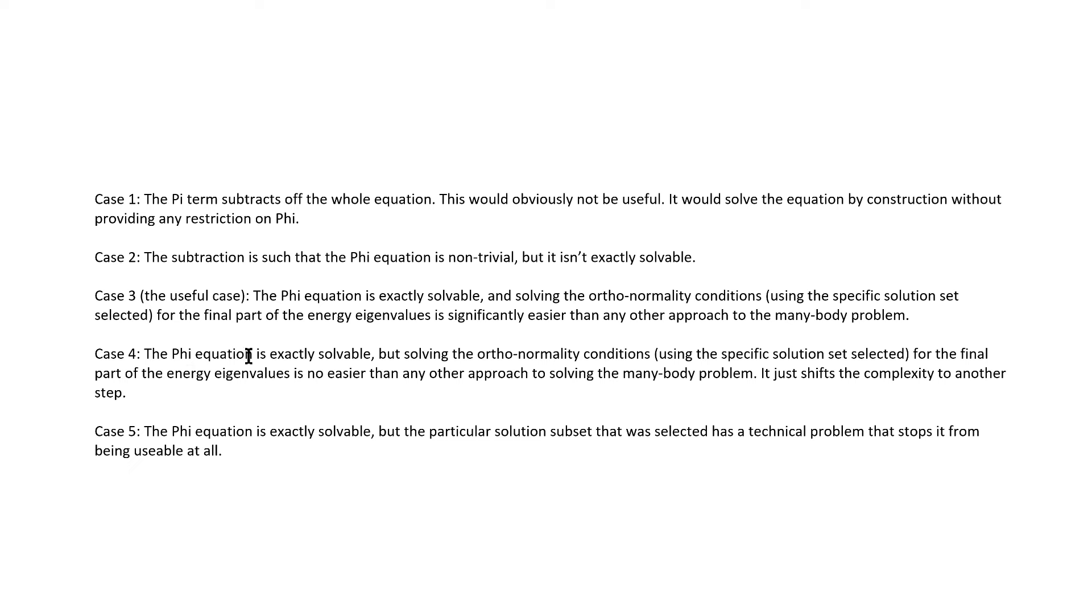The fourth possibility is that the phi equation is exactly solvable, but solving the orthonormality conditions using the specific solution set selected for the final part of the energy eigenvalues is no easier than any other approach to solving the many-body problem. It just shifts the complexity to another step, and it might even worsen it for all I know. In order to try and get from a case 4 to a case 3, one might consider using a different solution set if a promising one is available, or one might switch to an entirely different subtraction. The fifth possibility is that the phi equation is exactly solvable, but the particular solution subset that was selected has a technical problem that stops it from being usable at all. To get from a case 5 to a case 3, naturally one would try and find a different solution set, or maybe a different subtraction if there is no better solution set.